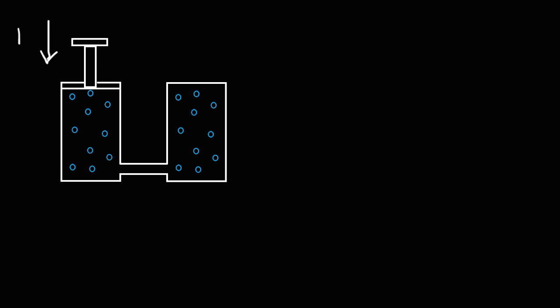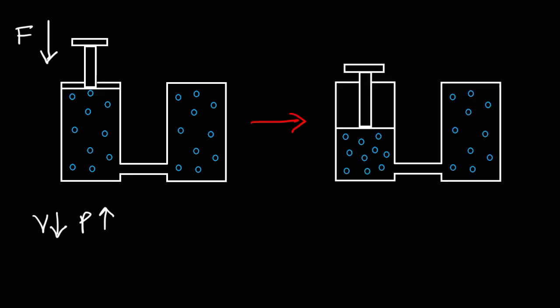In this diagram, we have two containers with roughly the same volume and the same number of molecules, so the pressure is approximately equal. But what's going to happen if we apply a downward force on the piston? As we apply a downward force, the volume of the container on the left side is going to decrease. According to Boyle's Law, the pressure should increase because we're compressing air. The volume has been reduced by a factor of two, so the pressure is going to increase proportionally — by a factor of two.